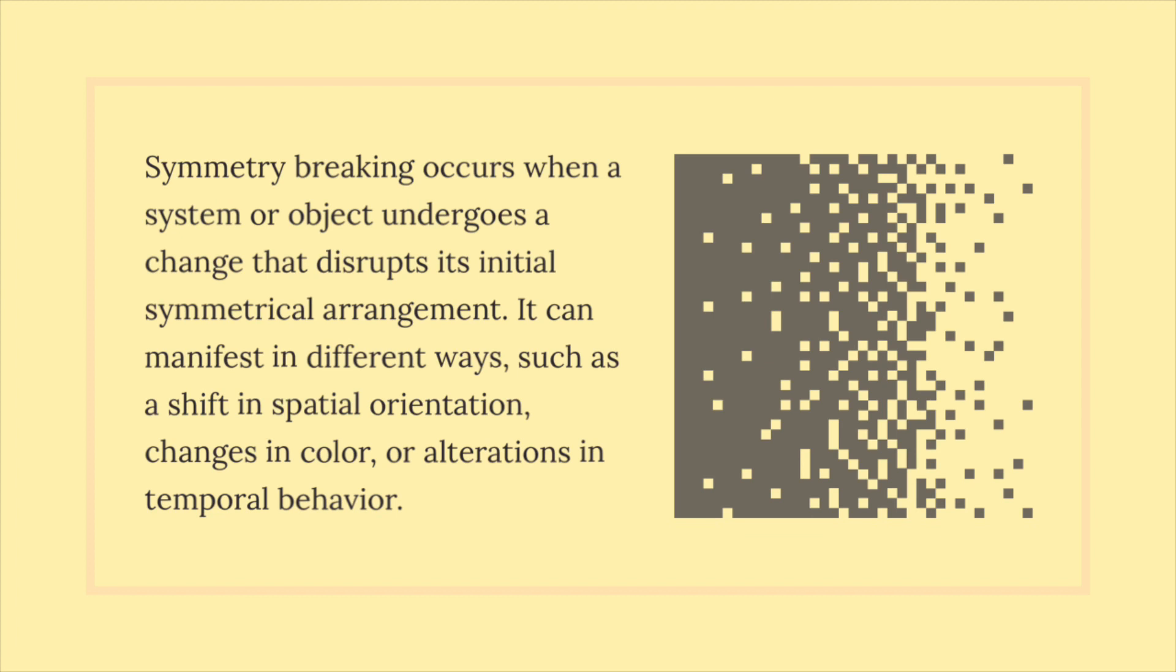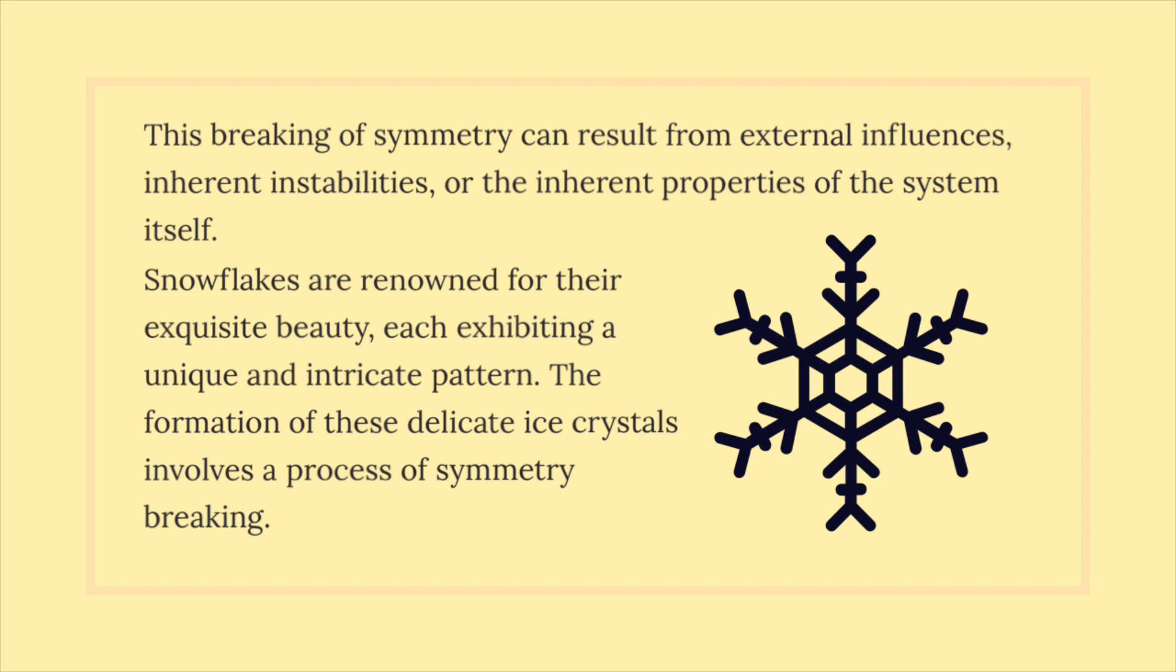Symmetry breaking occurs when a system or object undergoes a change that disrupts its initial symmetrical arrangement. It can manifest in different ways, such as a shift in spatial orientation, changes in color, or alterations in temporal behavior. This breaking of symmetry can result from external influences, inherent instabilities, or the inherent properties of the system itself.